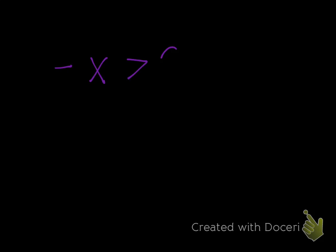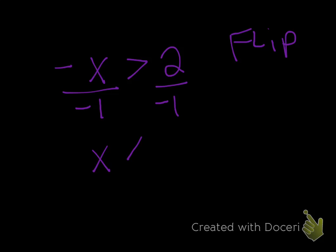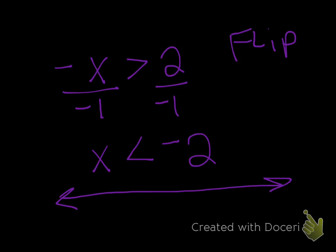Now we're going to do some graphing. Negative x is greater than 2. We know we have to divide by negative 1, so yes, we are going to flip it. That becomes x is less than negative 2. To graph it, you're starting at negative 2. It's not equal to, so it does not include negative 2 — use an open circle — and it's less than, so it's going to go this direction. If you're still struggling with the graphing, come talk to me.